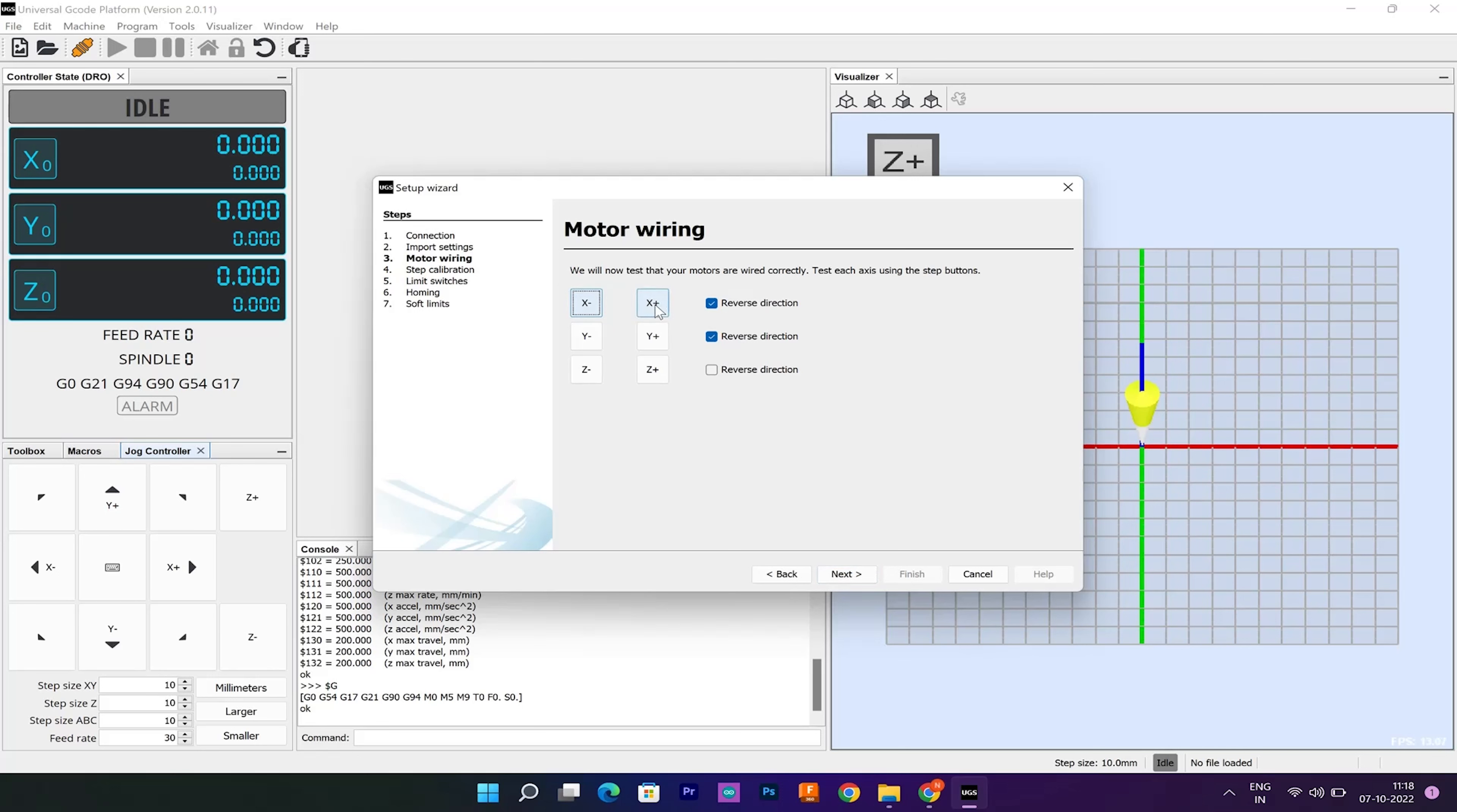If needed, we can reverse the direction through the wizard or by manually flipping the connection of the motor on the Arduino CNC shield.